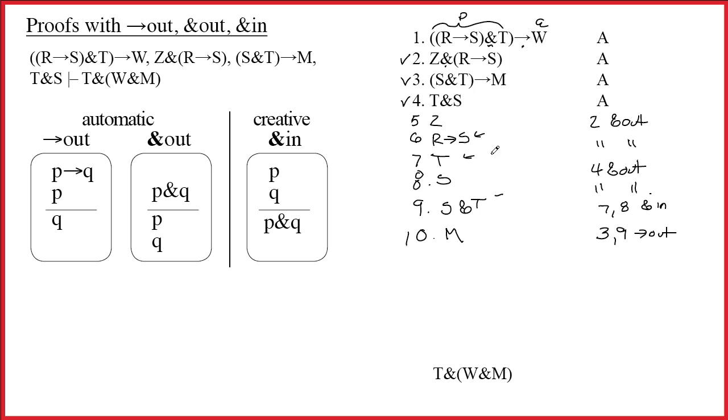And so what I can do on 11 is use ampersand in to write R arrow S ampersand T. The justification is six and seven ampersand in.